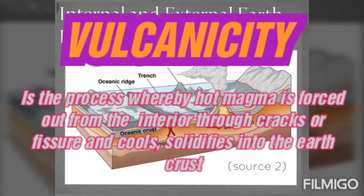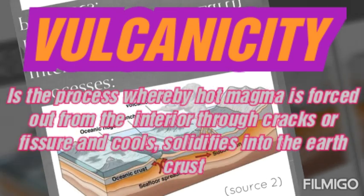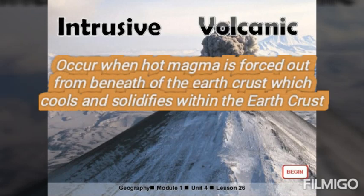Volcanism is the process whereby heat and magma is forced out from the interior of the earth through the crust. The types of volcanism are intrusive volcanism and extrusive volcanism. Intrusive volcanism occurs when magma is supposed to come out from beneath the earth's crust but solidifies within the earth's crust.